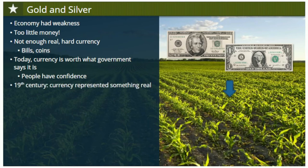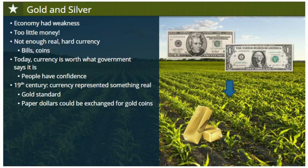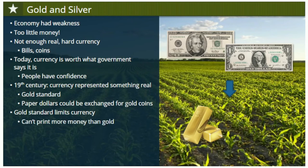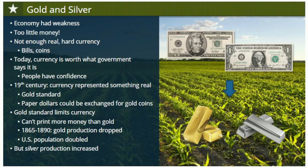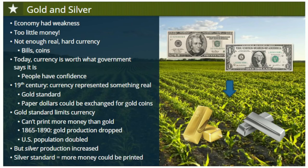In the nineteenth century, paper currency represented something more real. The nation's currency was tied to a gold standard — you could walk into a bank at any time and exchange your paper dollars for gold coins at a rate of exchange set by the government. Because gold is a scarce resource, nations that use a gold standard are limited as to how much currency they can print. But worldwide gold production actually dropped between 1865 and 1890 at the same time that the U.S. population nearly doubled and industry expanded. Meanwhile, silver production in the United States increased due to mining in the western states. If a silver standard could be introduced, much more money could be printed than a gold standard alone allowed.